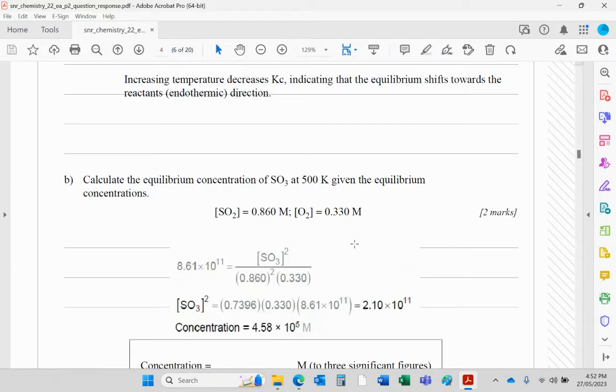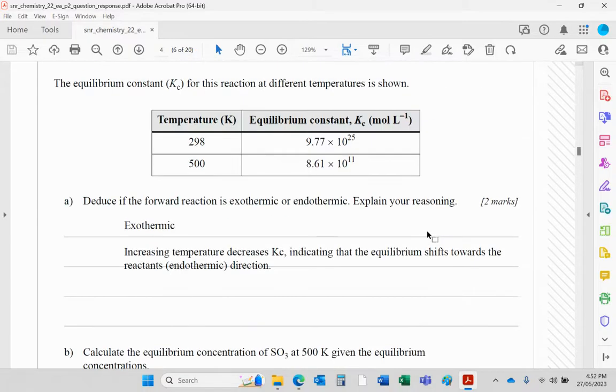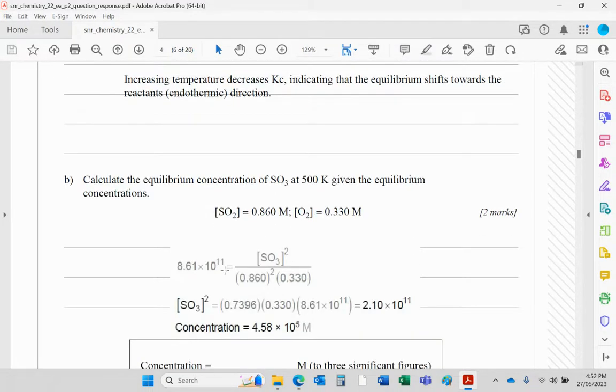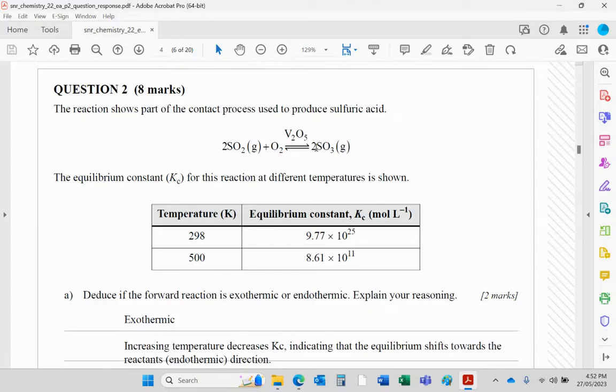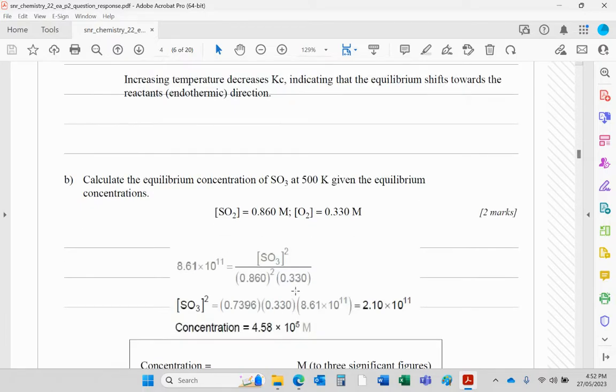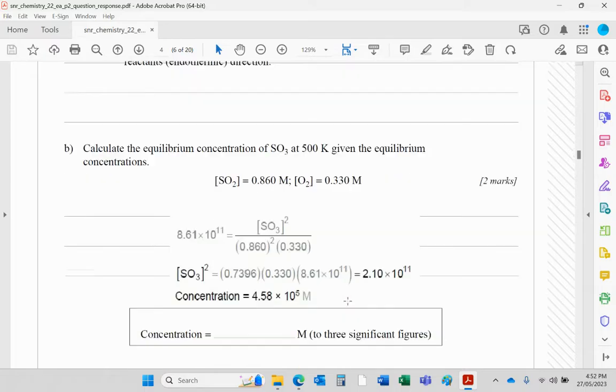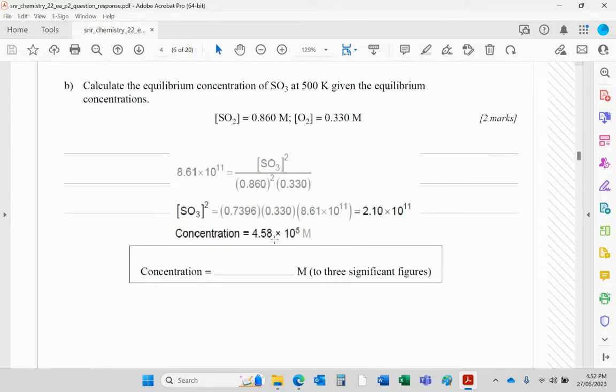Calculate the concentration of SO3, given the equilibrium concentrations there. So all we're doing basically is using the KC value: 8.61 times 10 to the 11 equals SO3 squared. Remember the equation, square if there's a number two in front. So that's squared, and likewise for that one. So effectively, do a little bit of maths and work out the concentration. Write that concentration please in the box.